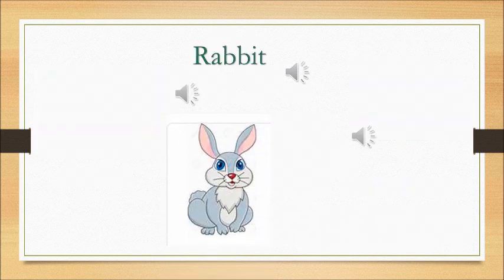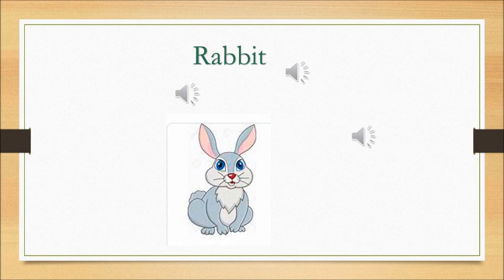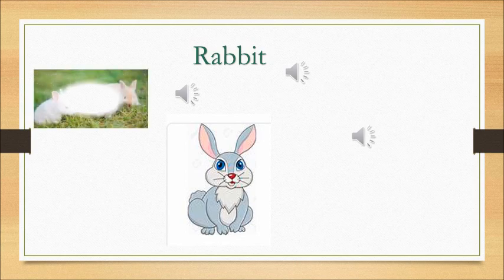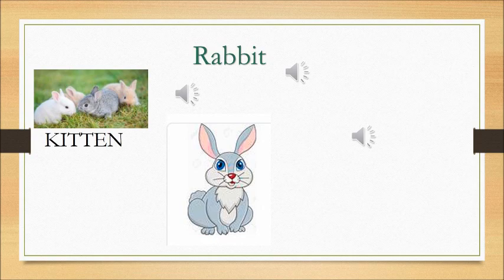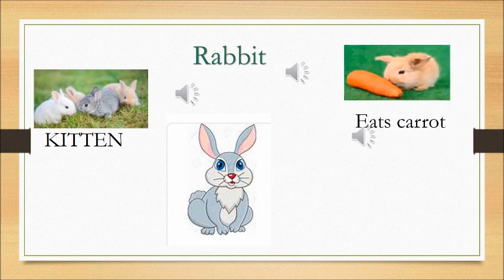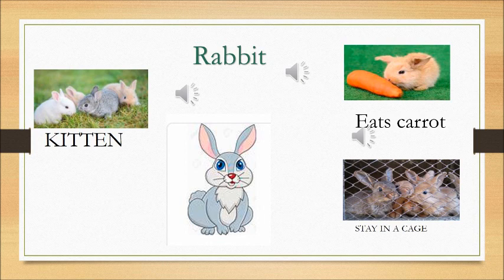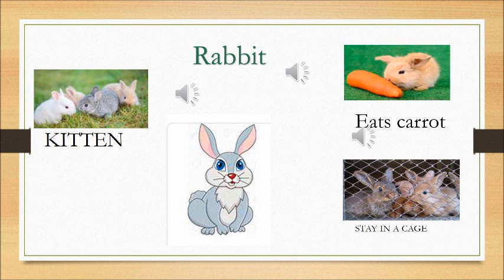Moving on to the next one is the rabbit. A baby rabbit is called a kitten. A baby rabbit is called a kitten. And it eats carrot. A rabbit eats carrot. It stays in a cage. It stays in a cage. Basically, we say that rabbits stay in a burrow, but at home they stay in a cage.